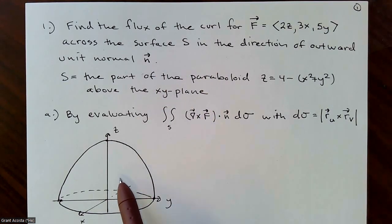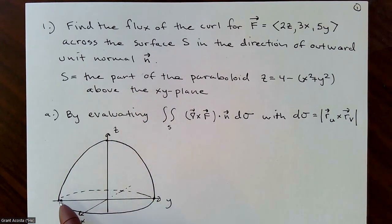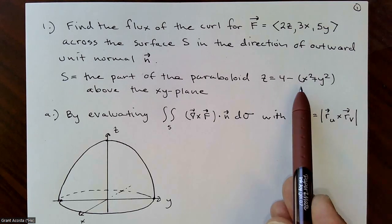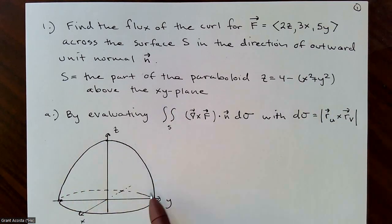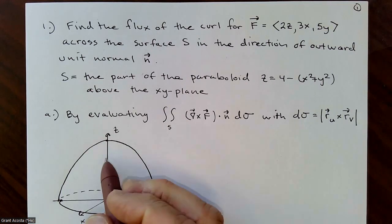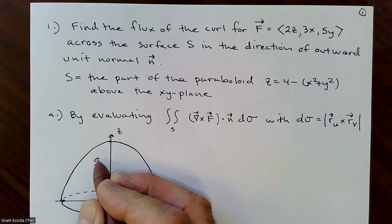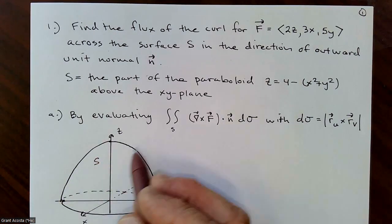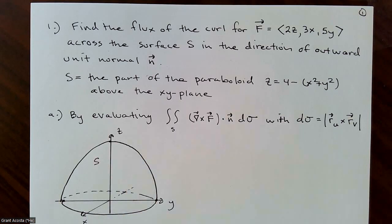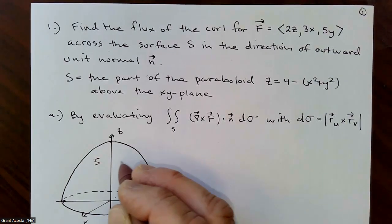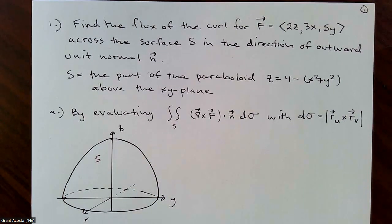Our surface S is the part of the paraboloid z = 4 − x² − y² above the xy-plane. That's an upside-down paraboloid. You can imagine a vector field passing through this, and we're trying to calculate the circulation — essentially, at every point, add them all up for the whole surface of that paraboloid. There are multiple ways to do this.